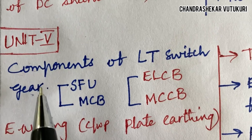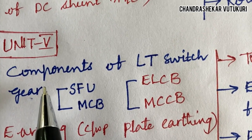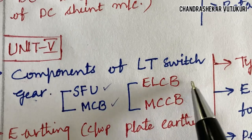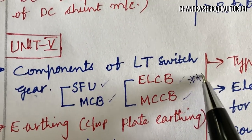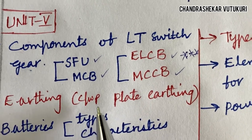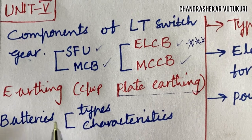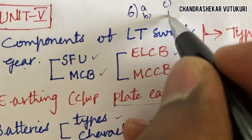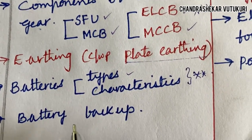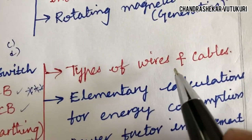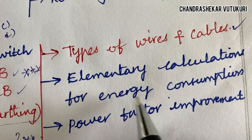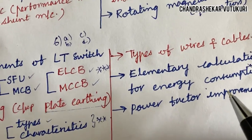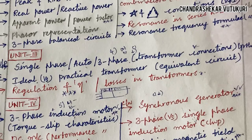The last unit — unit 5 — is short, and average students should start here. Components of LT switchgear related to SFU, MCB, ELCB, and MCCB may be short as well as long questions. The construction and working principle of earthing and batteries, types and characteristics, may also be short and long questions for 6AB and CD. Battery backup, types of wires and cables, elementary calculation for energy consumption, and power factor improvement are all possible short and long questions for Basic Electrical Engineering.